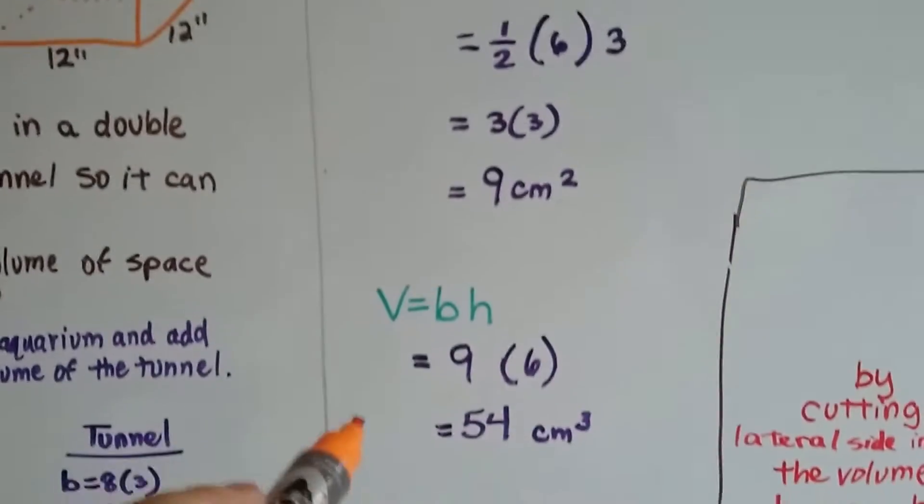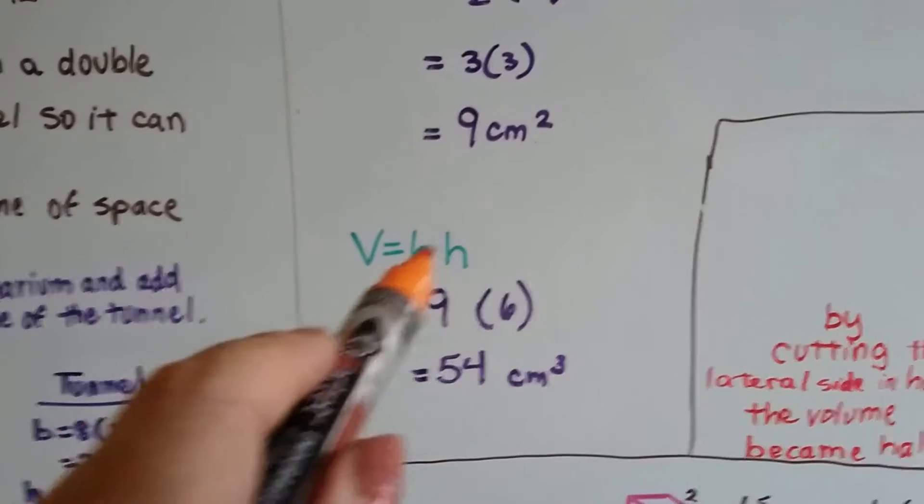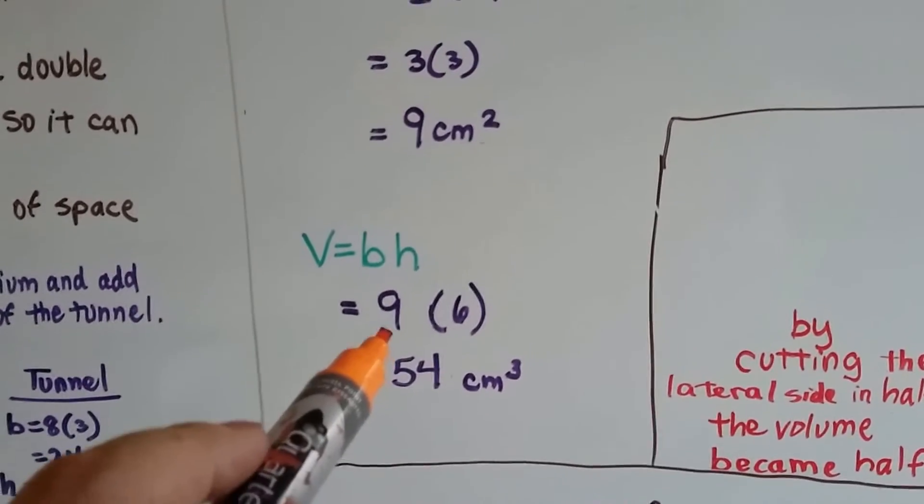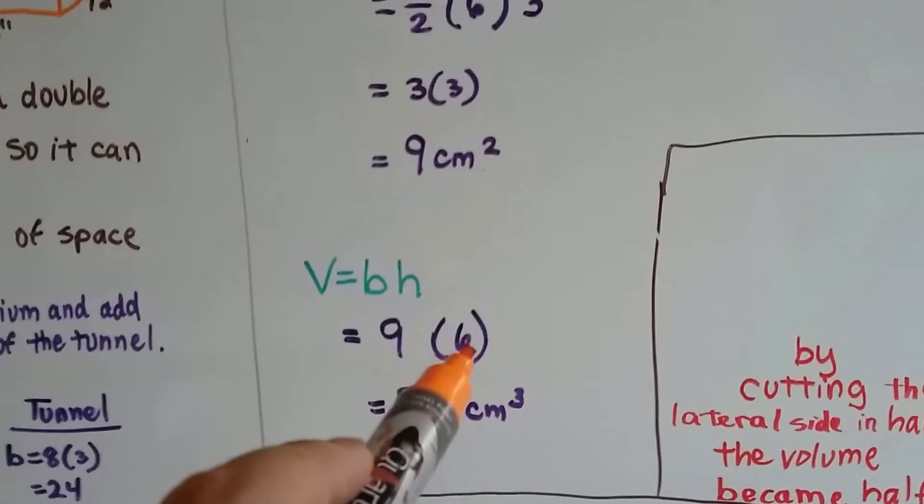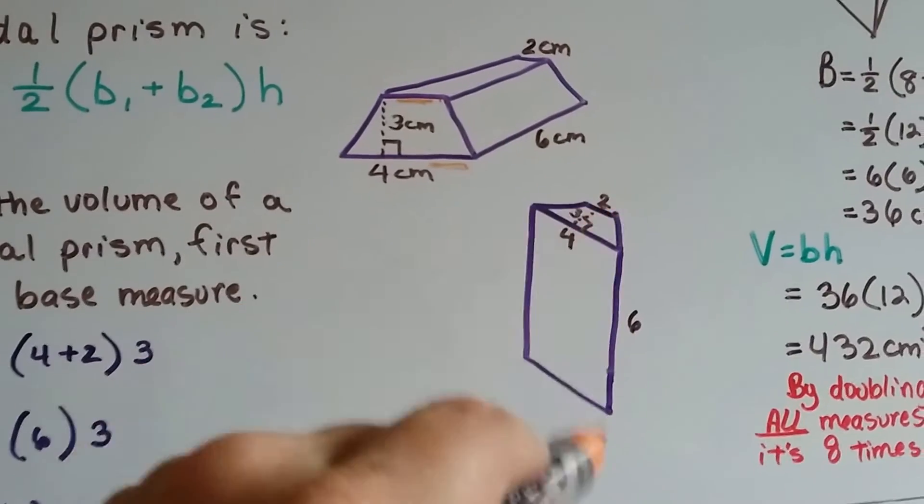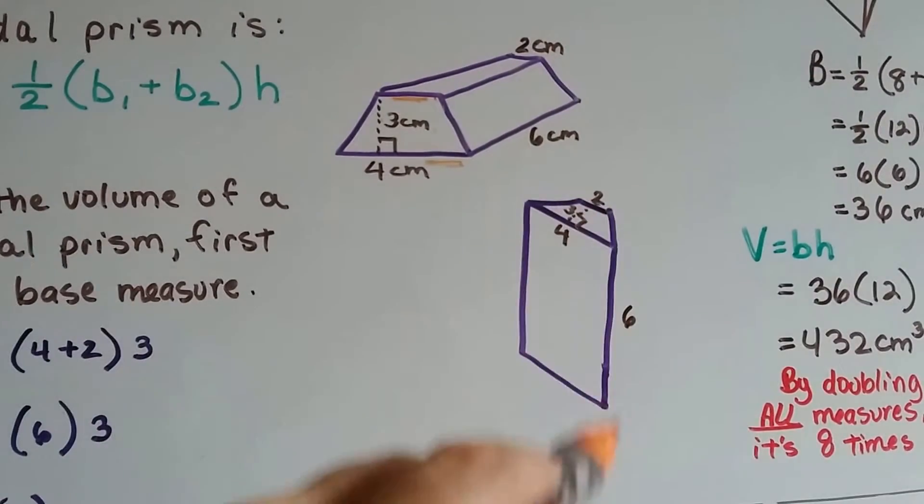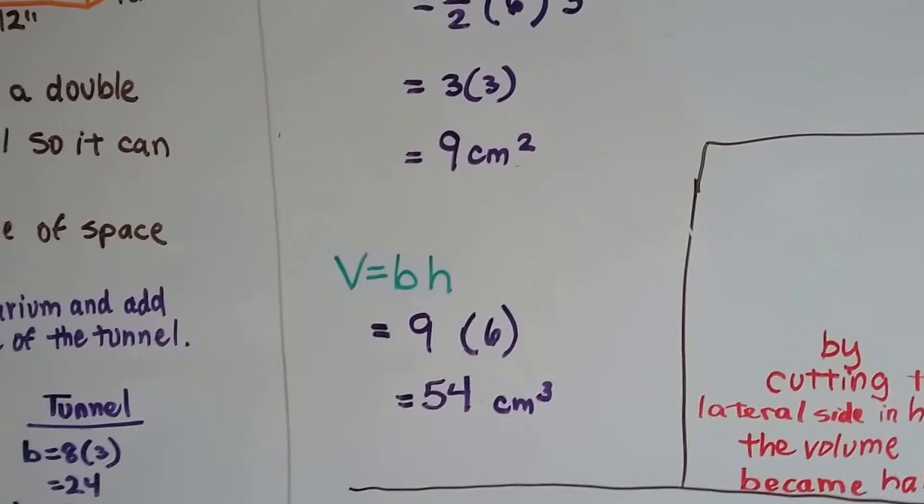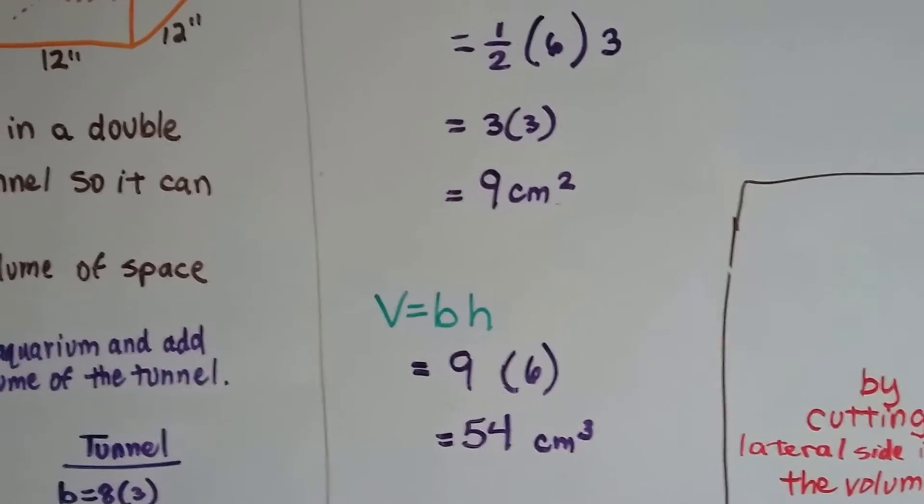Now we do the V equals bh, volume equals base times height, to find the volume. And the base, 9 times its height, we stand it on its end so that the height is the lateral side, is 6. We get 54 centimeters cubed. That's the volume of the trapezoidal prism.